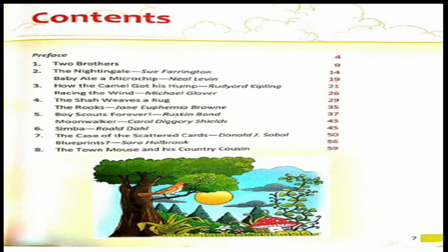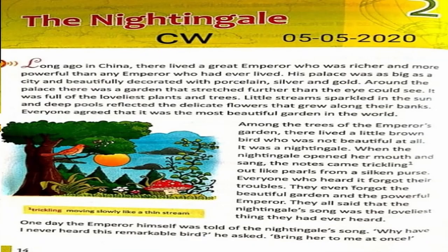Let's go ahead — chapter number two, 'The Nightingale.' The first thing you have to do is put 'classwork' just below the name of the chapter. Ivy ma'am has already put CW — classwork. So you also have to put CW classwork. Then on the right-hand side you have to put today's date. Have you put the date? Very good. Now let us start.